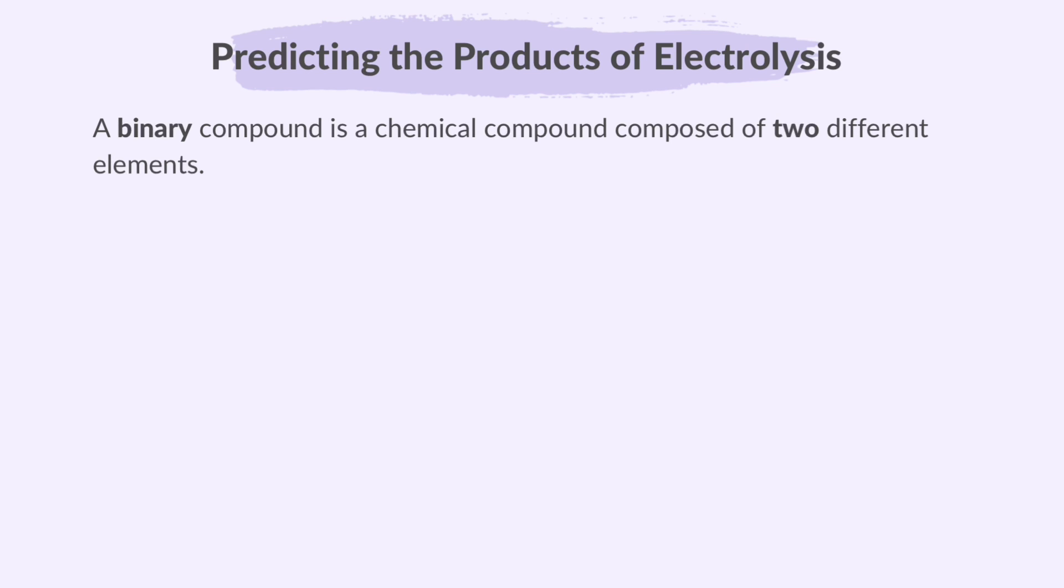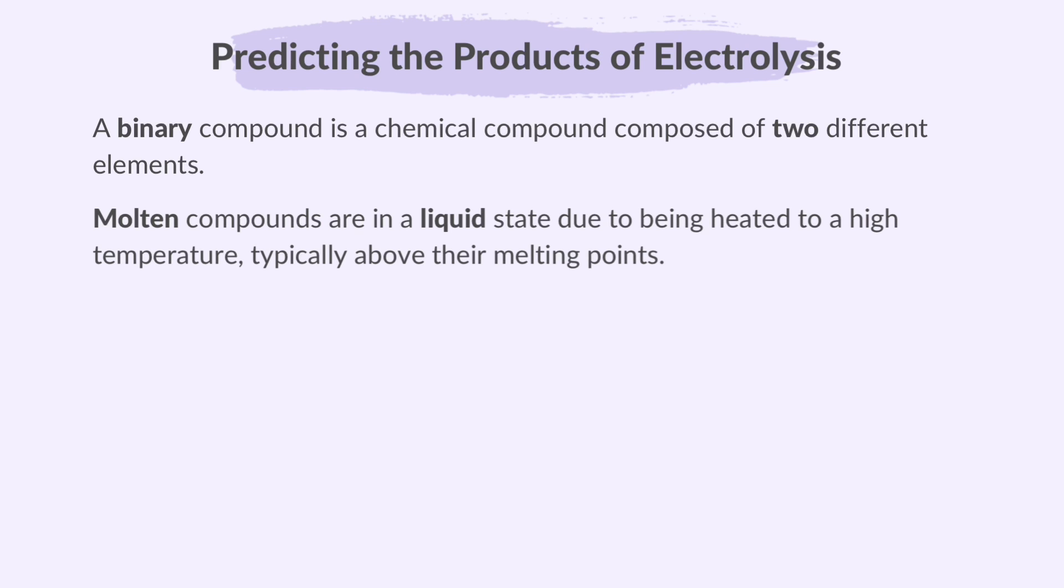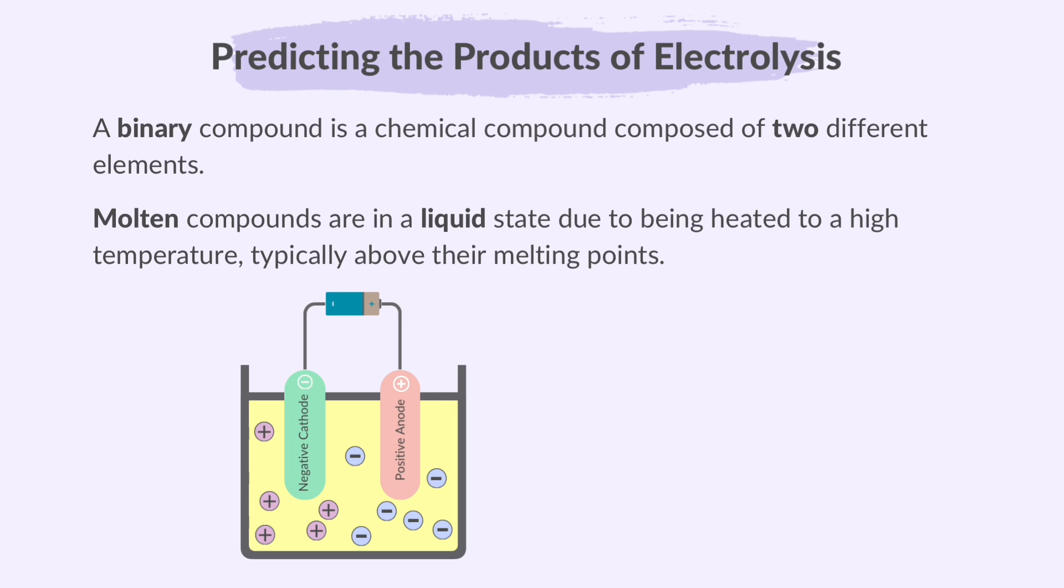A binary compound is a chemical compound composed of two different elements. Molten compounds are in a liquid state due to being heated to a high temperature, typically above their melting points. So, if the electrolyte is a binary molten ionic compound, we know that once it undergoes electrolysis, the ions in the electrolyte will be just the two elements that make up the compound.